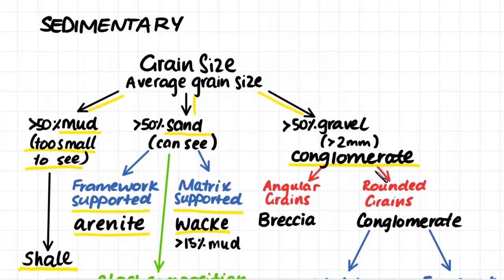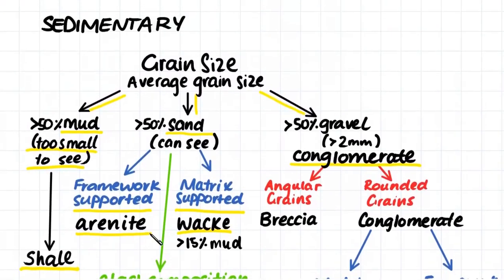Now, if we're looking at a conglomerate, another way to classify a conglomerate further is to look at the shape of its grains. A conglomerate with angular grains is actually called a breccia. It is still a conglomerate technically, but we use the word breccia to describe it. A conglomerate with rounded grains is still called a conglomerate.